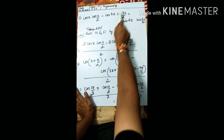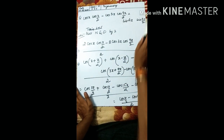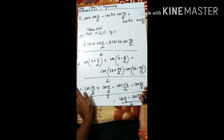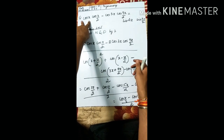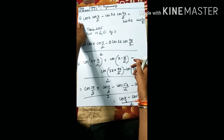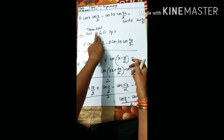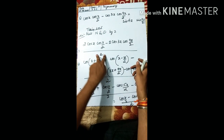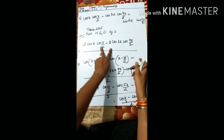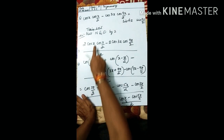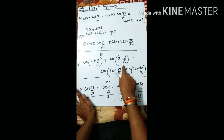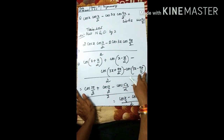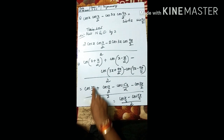The next question: cosx · cos(x/2) - cos3x · cos(9x/2) = sin4x · sin(7x/2). This is a slightly different type. It looks like cosx · cosy but we don't have the factor of 2, so multiply numerator and denominator by 2. Now apply 2cosxcosy = cos(x+y) + cos(x-y): giving cos(x + x/2) + cos(x - x/2), and similarly for cos3x · cos(9x/2).